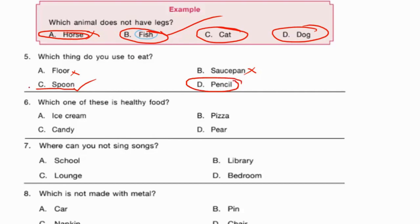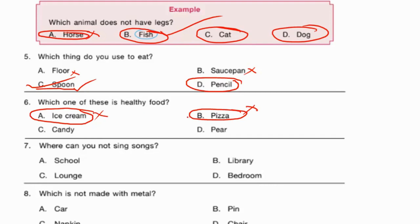Question six: which one is healthy food? Ice cream — yummy but not healthy, you may get throat pain. Pizza — yummy but it's junk food with negative effects. Candy — not a healthy food. Pear — yes, it is a fruit, and fruits and vegetables are nutritious food. So option D, pear, is the correct answer.